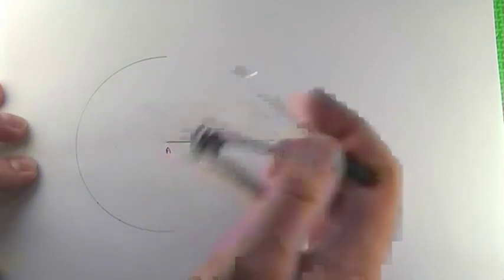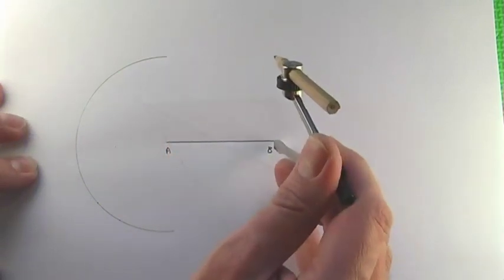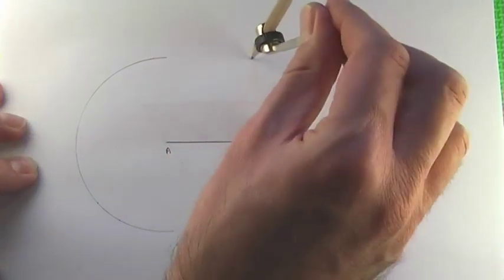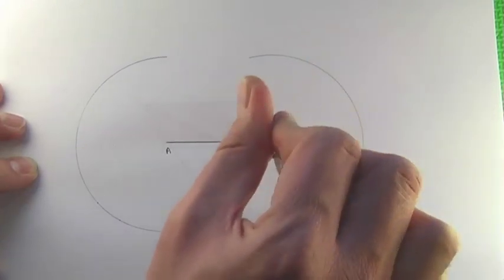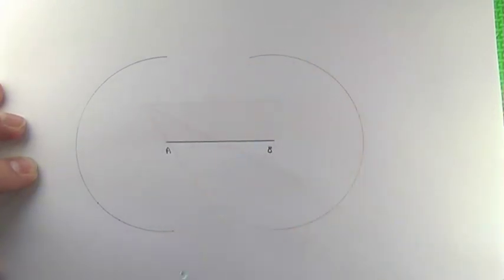So, I've set my compass to 5cm, and I've drawn roughly a semi-circle at each end of the line. I've done that quite faintly, and that's called a construction line.